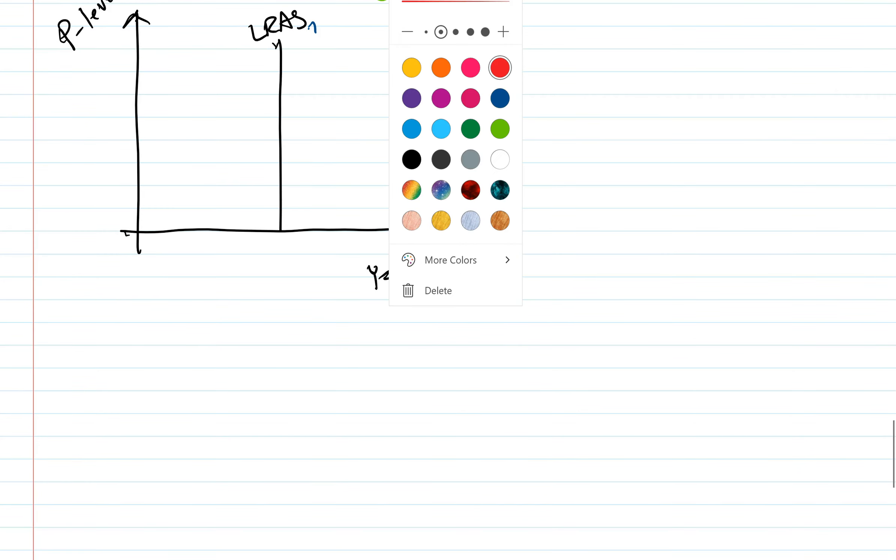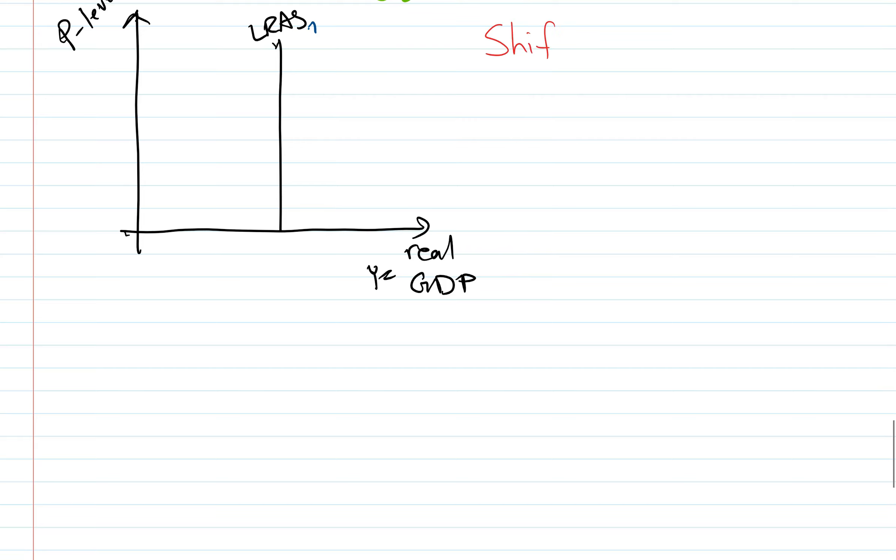Okay, so now we're going to talk about what's going to cause shifts in long-run aggregate supply. What we're talking about, we're really talking about the changes in potential GDP. To think about this, just remember back to the economic growth chapter. We're really talking about things that change the ability of your country to produce, the absolute ability of the country to produce.